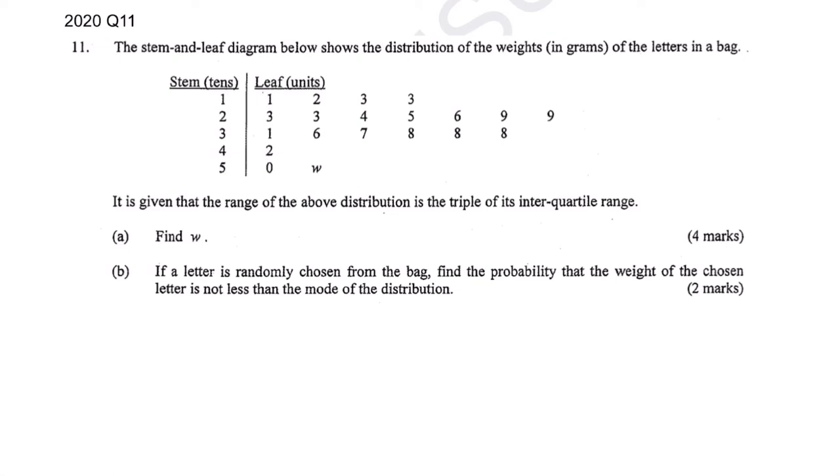Let's get started. The stem and leaf diagram is this diagram here. What it means is if you see one on the tens side and one on the units side, then you read this number as 11. Even if you have to input in your calculator, you have to input as 11, not 1, 1, 2, 3 like that. It should be 11, 12, 13, 13, 23, 23, 42, 50.